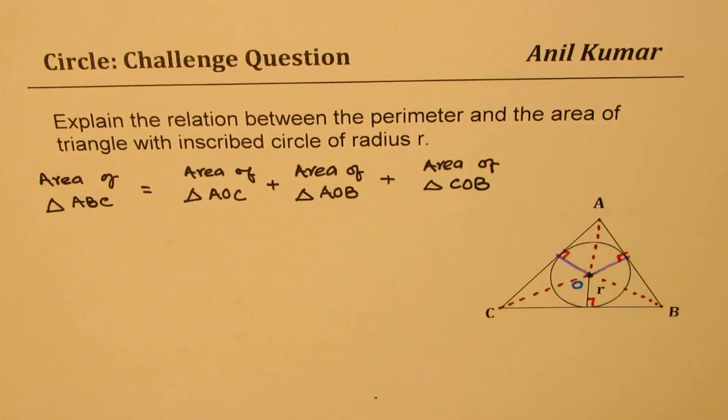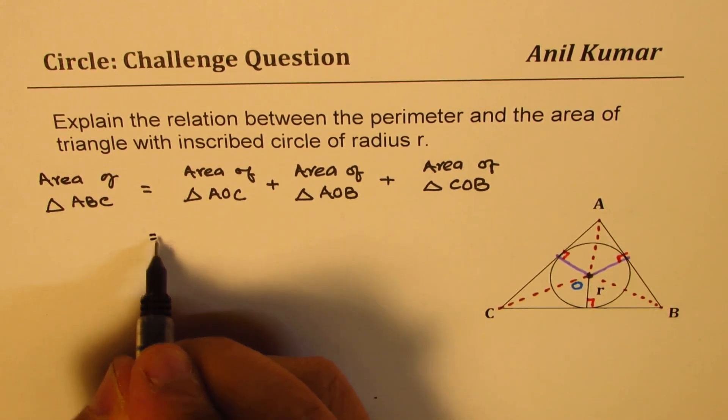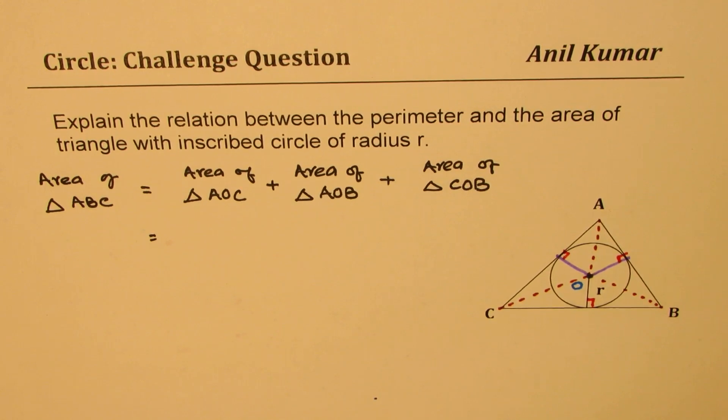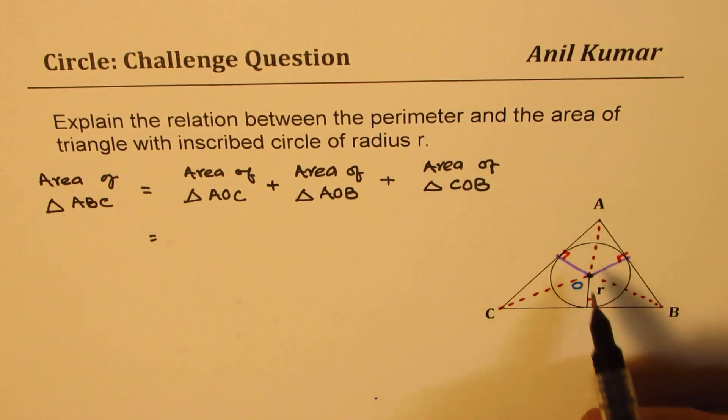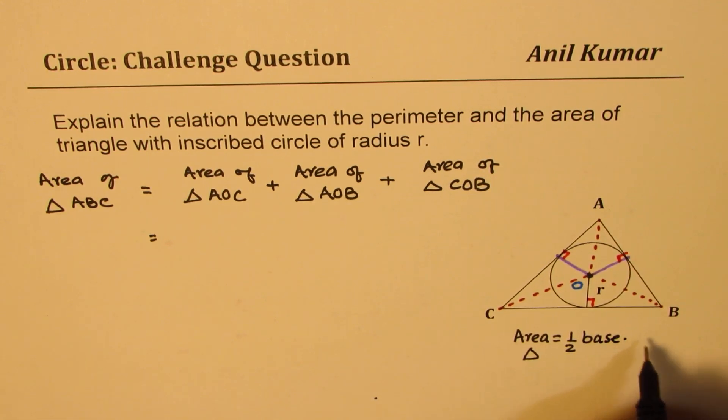So that is how we can relate all the three triangles with the total triangle. Now the formula for area of a triangle is half base into height. So we are going to use this common formula.